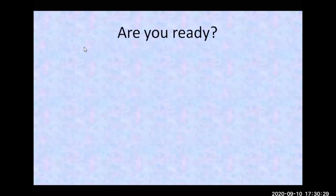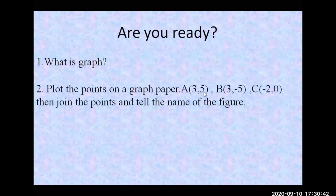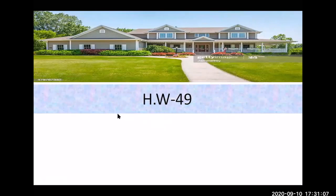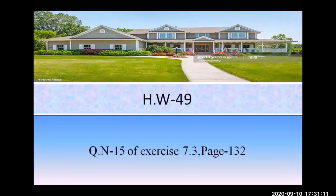Now some questions for you. What is a graph? Also, plot these points on graph paper: A(3, 5), B(3, minus 5), and C(minus 2, 0). Join the points and identify the name of the figure — it may be a triangle. This is your homework, along with question 15 of Exercise 7.3, page 132. If you have any confusion, ask your teacher in the live class. Thank you very much.